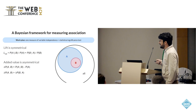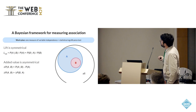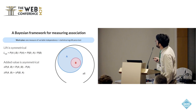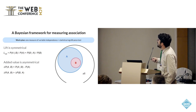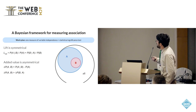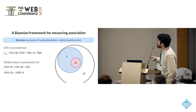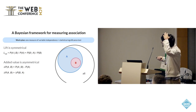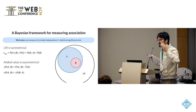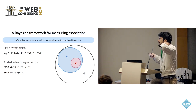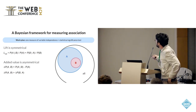So, the work plan: how do we solve this? We are going to use one measure of variable independence, similar to lift but different, and we will perform a statistical significance test. Specifically, I'll propose what I believe is the best way to do this.